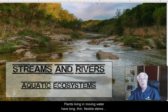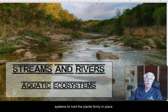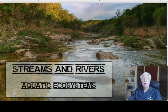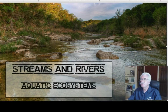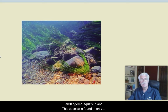Stream plants and animals have developed special adaptations for life in river and stream habitats. Plants living in moving waters have long, thin, flexible stems that offer little resistance to the current and strong root systems to hold the plants firmly in place. This is Texas wild rice — an endangered species found in the San Marcos River system.